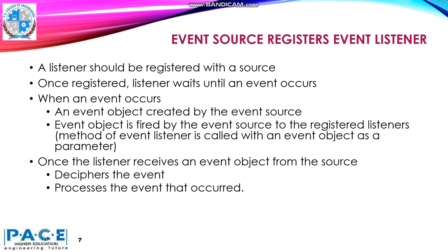For the Delegation Event Model to work, the Event Listener has to be registered with the Event Source — a listener should be registered with the source. Once the listener is registered, it waits until an event occurs. When an event occurs, the Event Object is created by the Event Source and fired to the registered listener. That is, the method of the Event Listener is called with an Event Object as a parameter. Once the Event Listener receives the Event Object, it extracts and processes the event that has occurred.